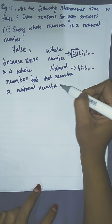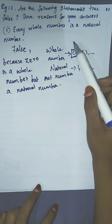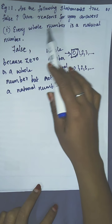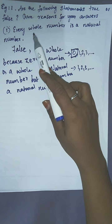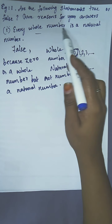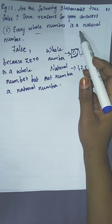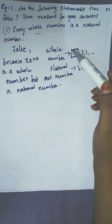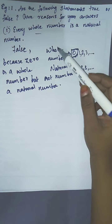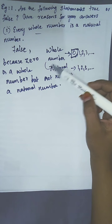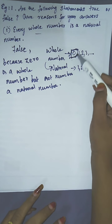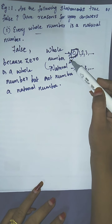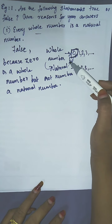And this is the reason. So the statement 'every whole number is a natural number' is false because all whole numbers are not natural numbers — because 0 is not a natural number.